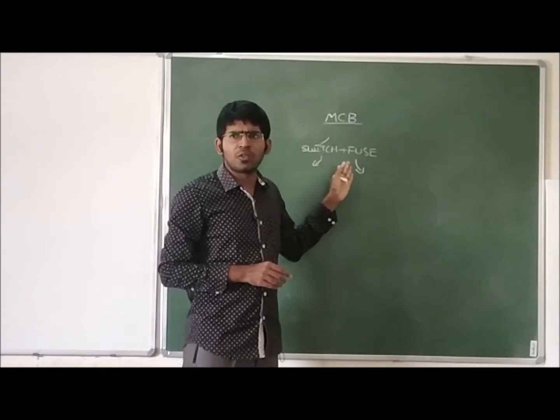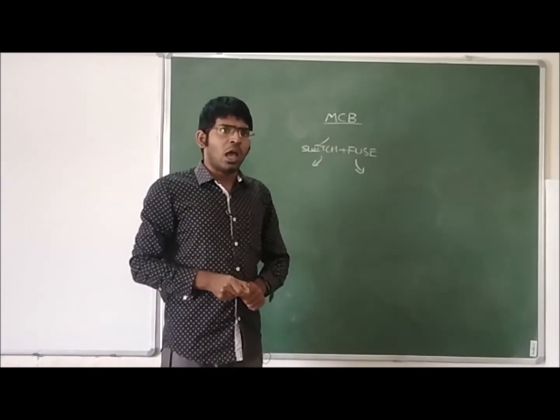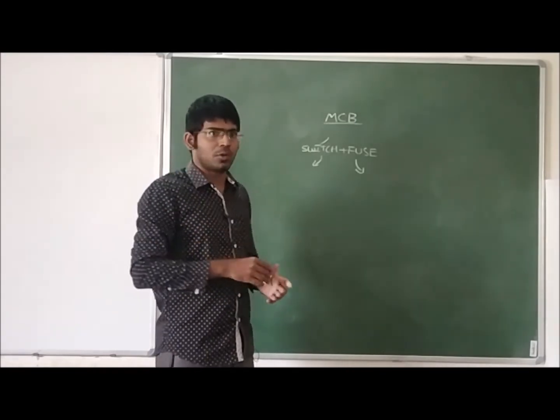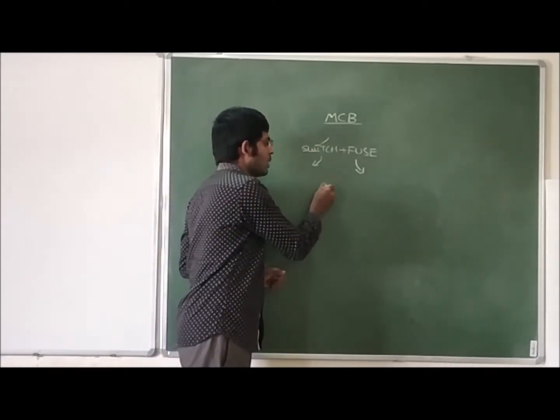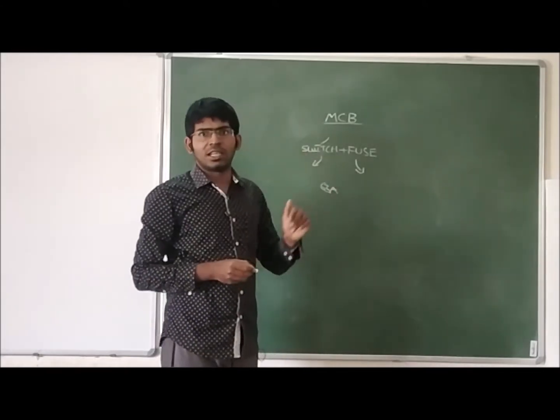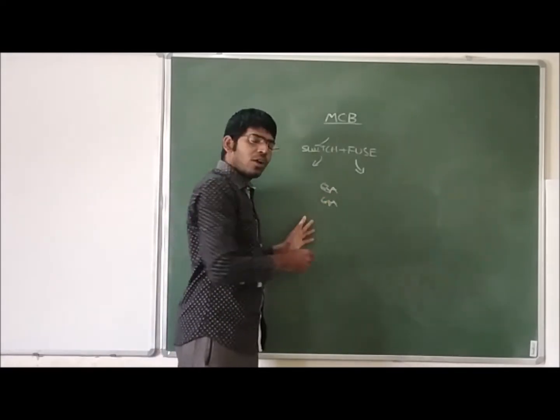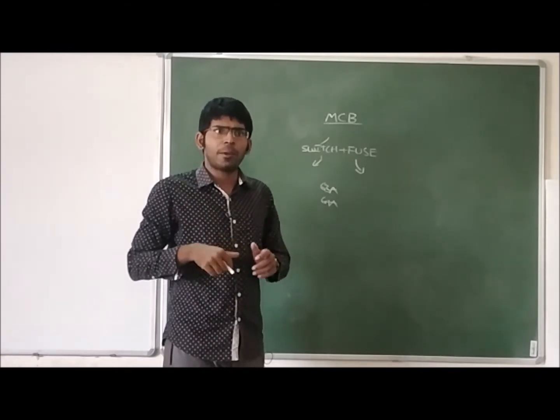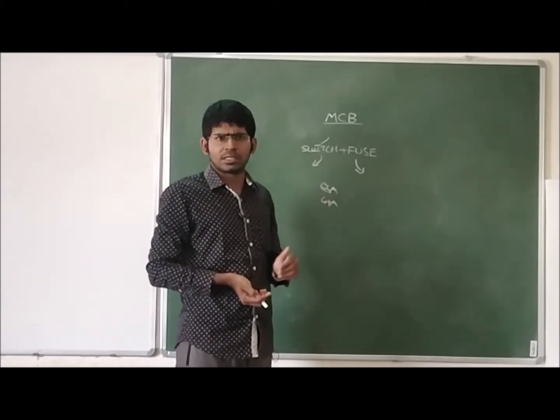But what is the speciality of the MCB? The speciality of the MCB comes when the over current is observed. For example, for this classroom, there is an MCB with a current rating of 63 amperes. If we get 64 amperes current at any load here, maybe we are operating some load which is drawing more current, more than 63 amperes.